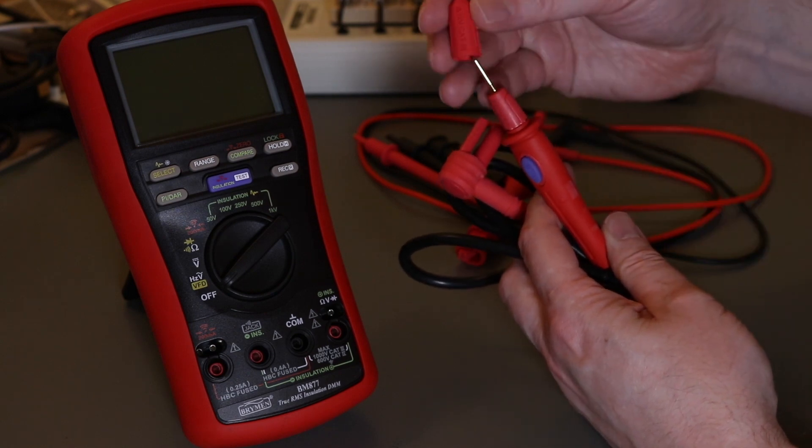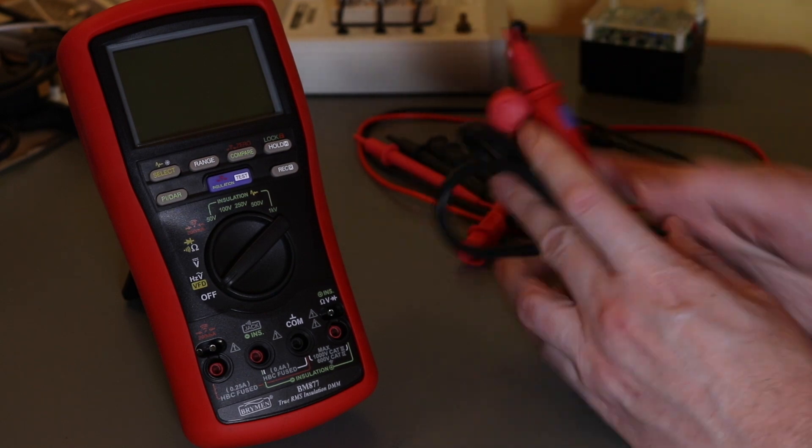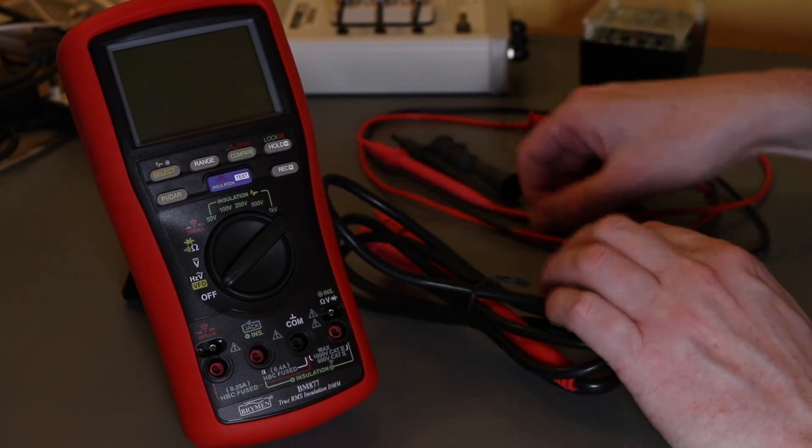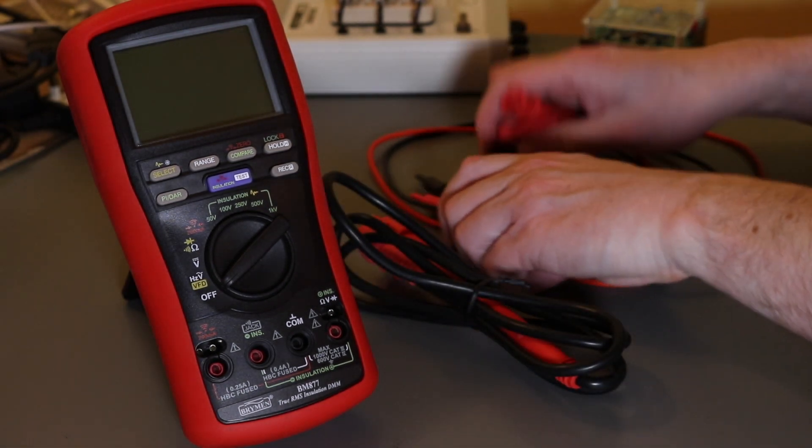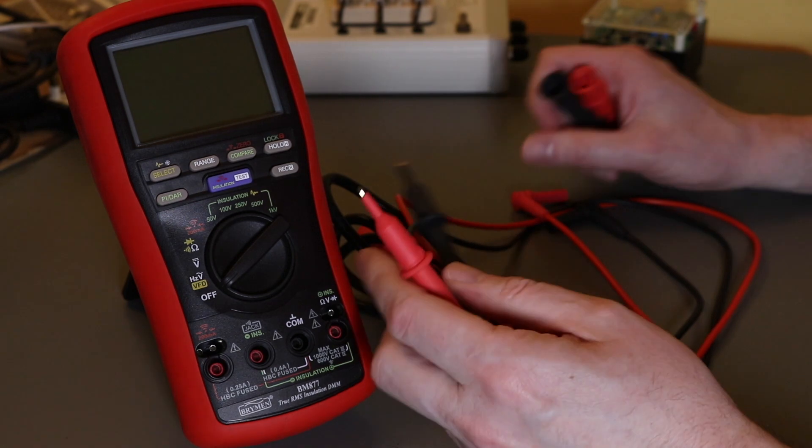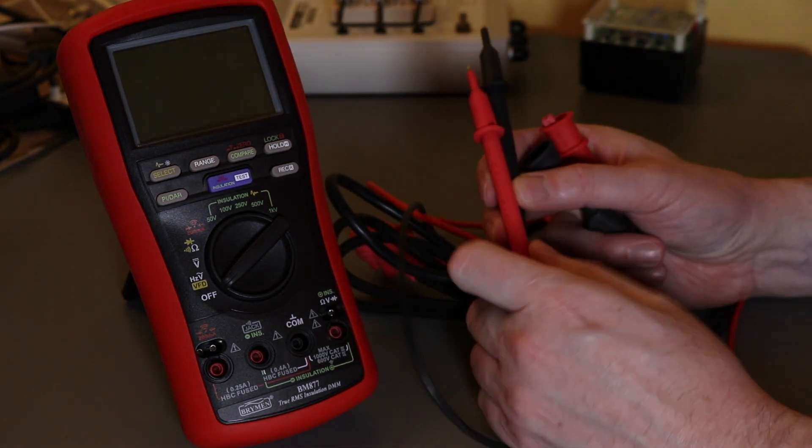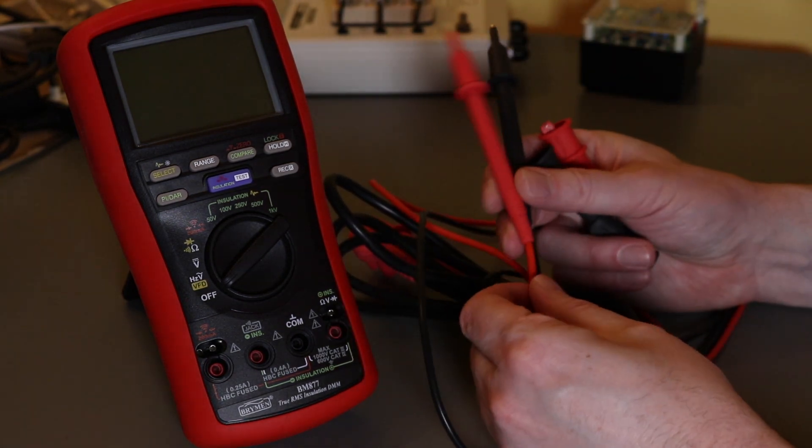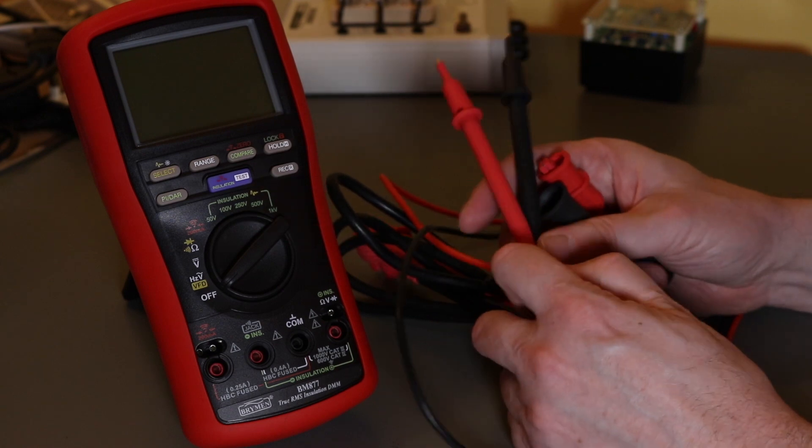You have a set of red black leads and croc clips. The leads are molded on the end here with the probes. They're not 4 millimeter on this end.